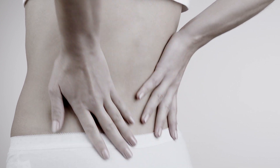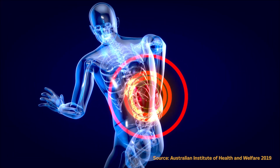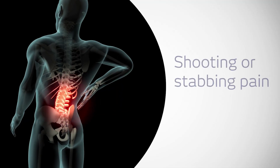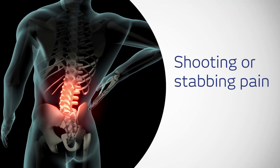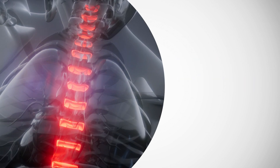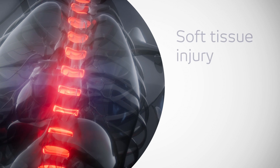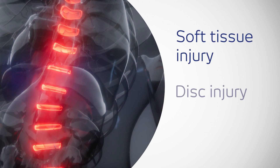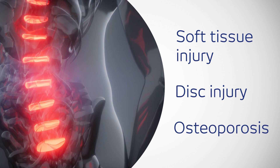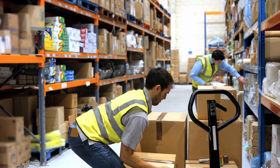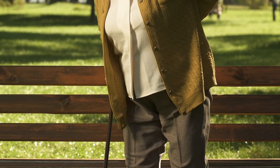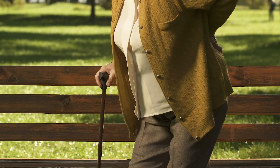Lower back pain affects up to 90% of people at some stage in their life. An injury can present as shooting or stabbing pain that radiates through the hips, up the back or down the legs. Common conditions include soft tissue injury, bulging or ruptured discs and osteoporosis. Factors such as improper or heavy lifting practices, age or excess body weight may cause or exacerbate pain.